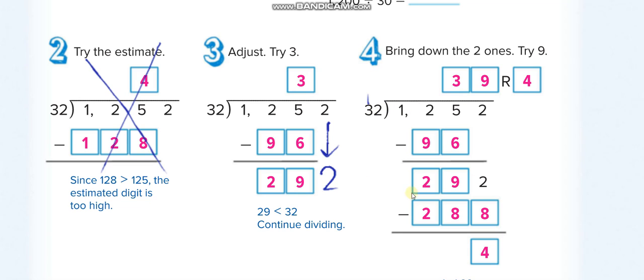Now you'll think, 32 times what equals 292? You can try any number multiplied by 10. 32 times 10 is 320, which is close but bigger, so try one less, which is 9. 32 times 9 is 288, and when you subtract, the remainder is 4.